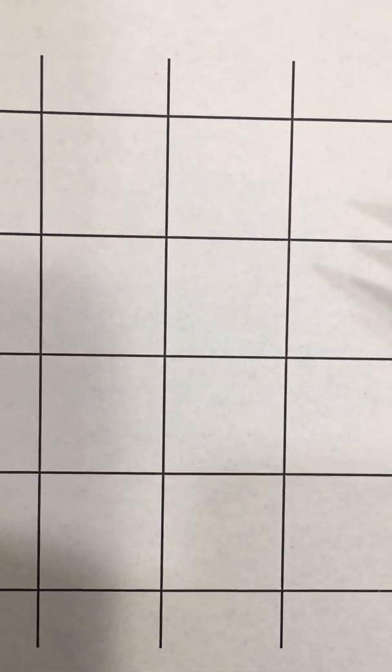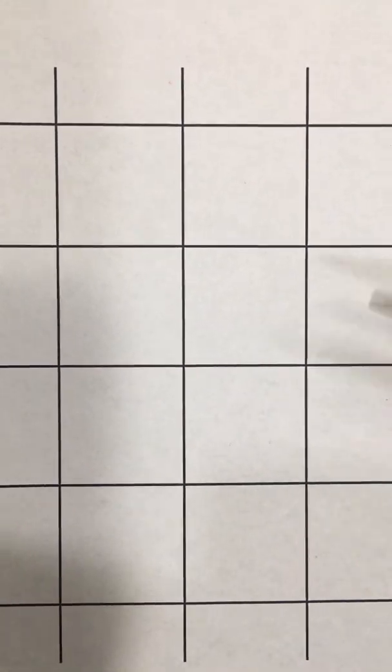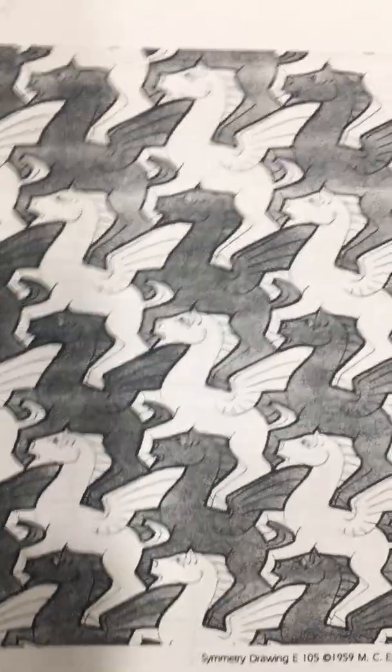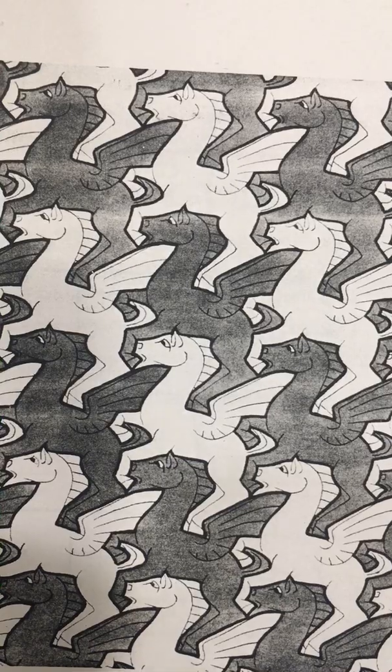Now, we know that squares, hexagons, and triangles are the only regular polygons that tessellate, but this square tessellation is how M.C. Escher began this horse tessellation. And let me prove it to you here.